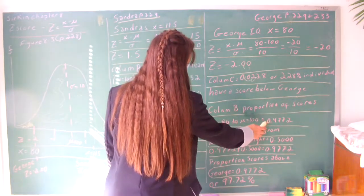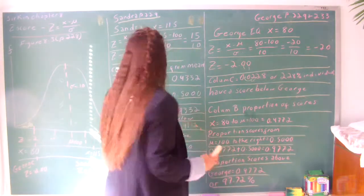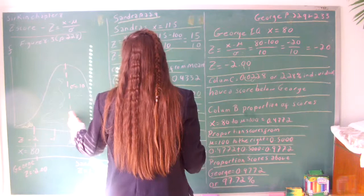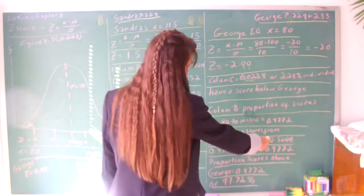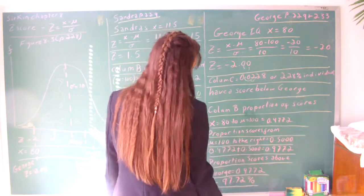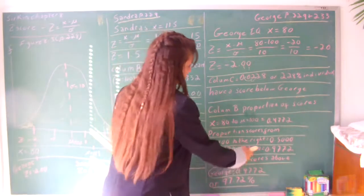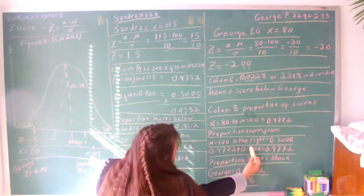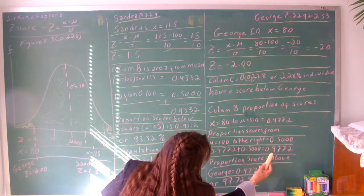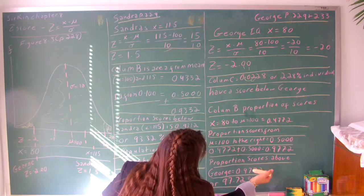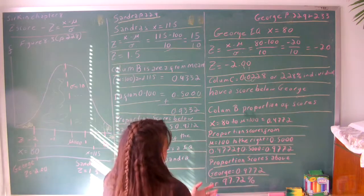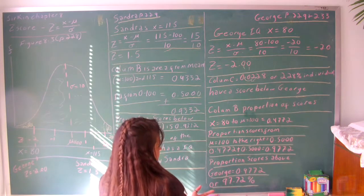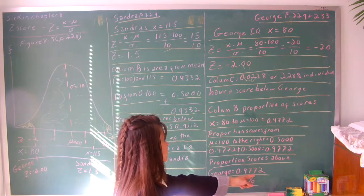You add the proportion from column B to the other half, because that's only from one half, which is 50%, or 0.5000. So 0.4772 plus 0.5000 equals 0.9772. So basically, the proportion of scores above George's is 0.9772.